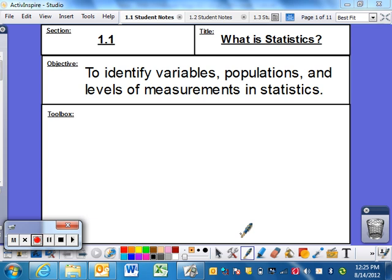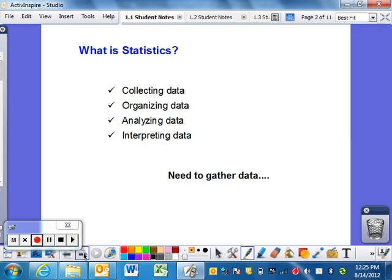Welcome to the statistics notes for section 1.1, titled What is Statistics. The objective of this lesson is to identify variables, populations, and levels of measurements in statistics. We'll get a broad overview of what statistics is. Statistics is simply taking data, collecting it, organizing it, analyzing it, and interpreting it.